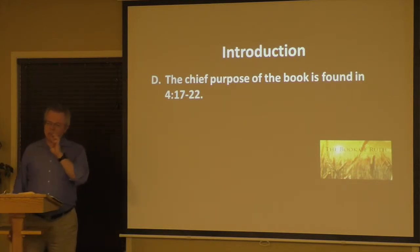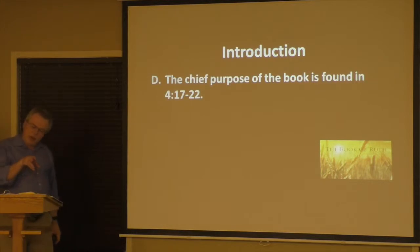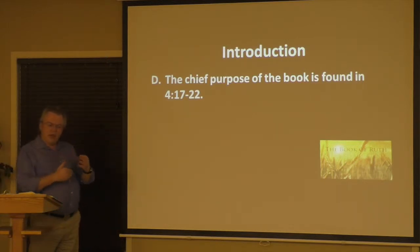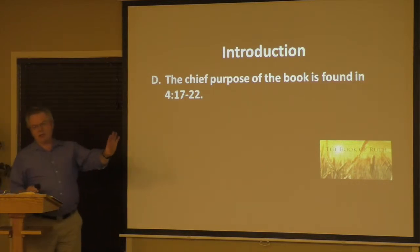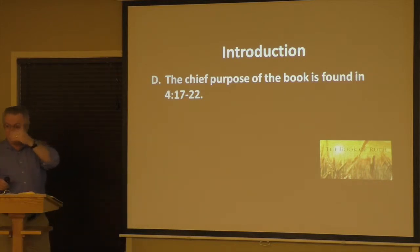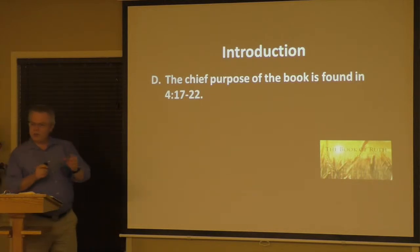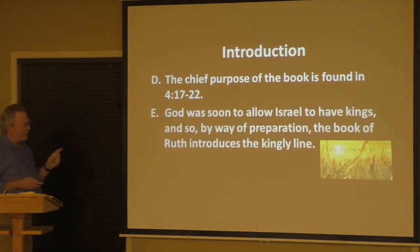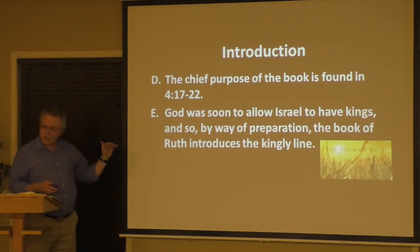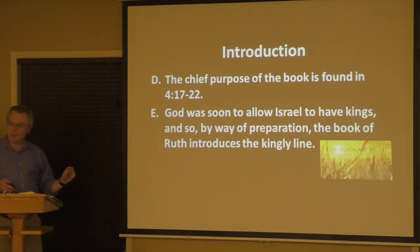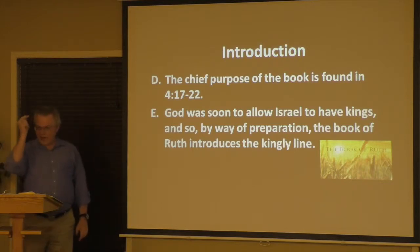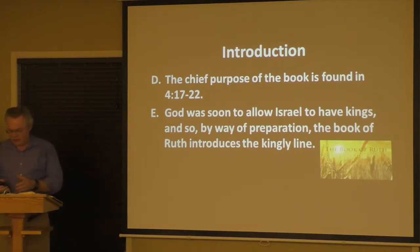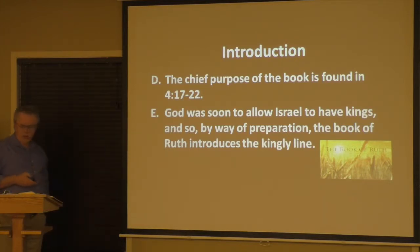Now we begin to understand why this little four-chapter book is nestled between the end of Judges and the beginning of 1 Samuel. We're going to see how the nation transitions from being led by judges into a period where it begins to have a monarchy, beginning with King Saul. Ruth is that connector, to help us understand how this comes to be. God was soon to allow Israel to have kings, and by way of preparation, the book of Ruth introduces the kingly line.